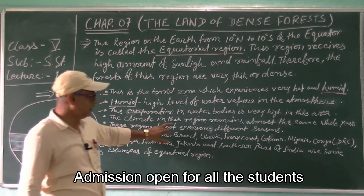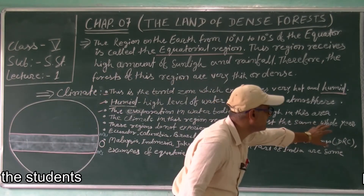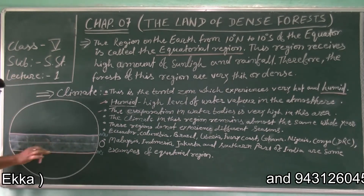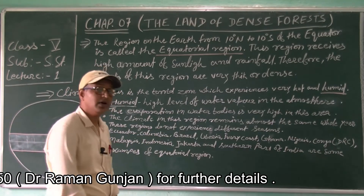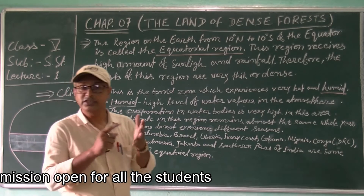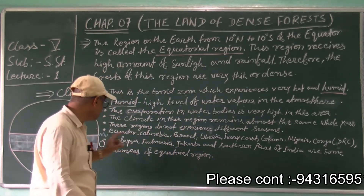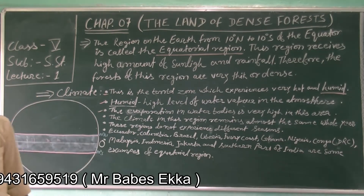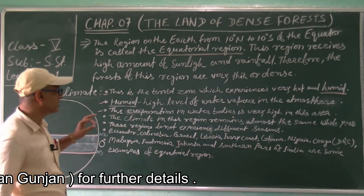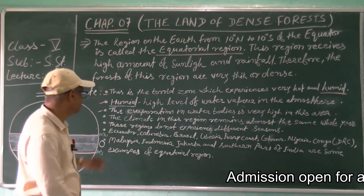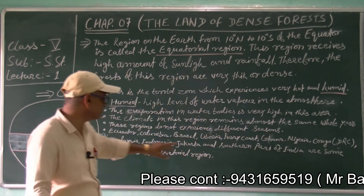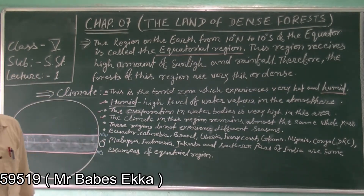The climate in this region remains almost the same throughout the whole year. We have summer, rainy, and winter seasons, but in this equatorial region, the climate condition is the same. The same climatic condition and same season can be felt all year. These regions do not experience different seasons.